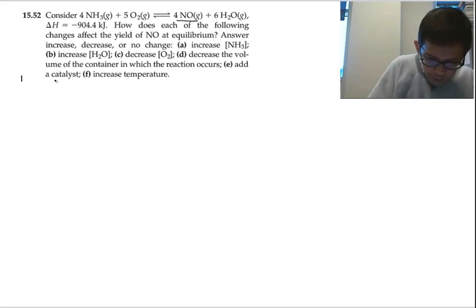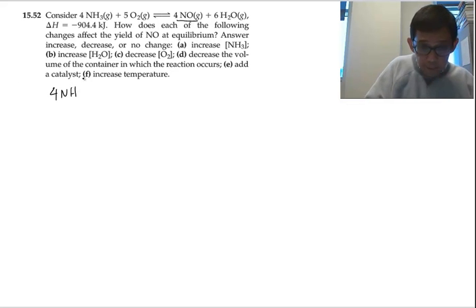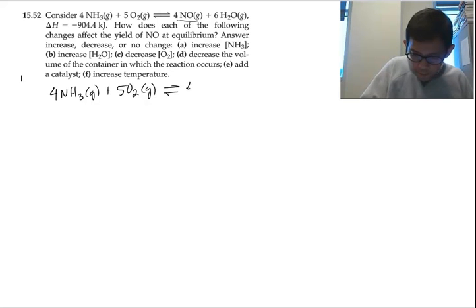Let's rewrite our equation. 4NH3 plus 5O2 equilibrium 4NO plus 6H2O.